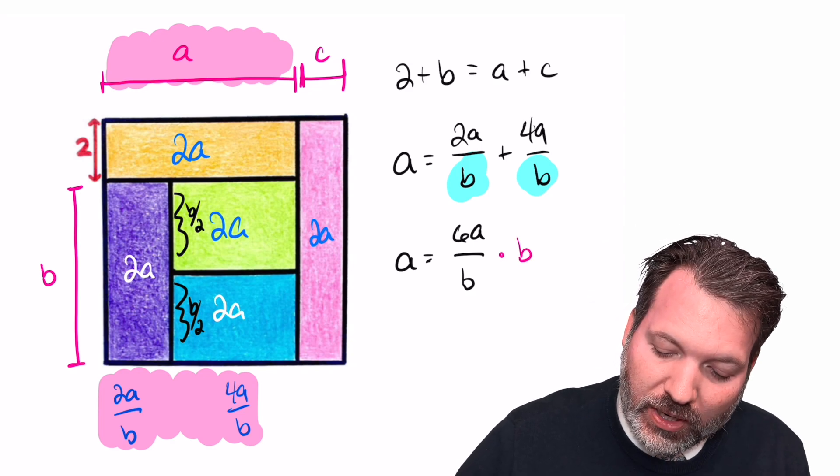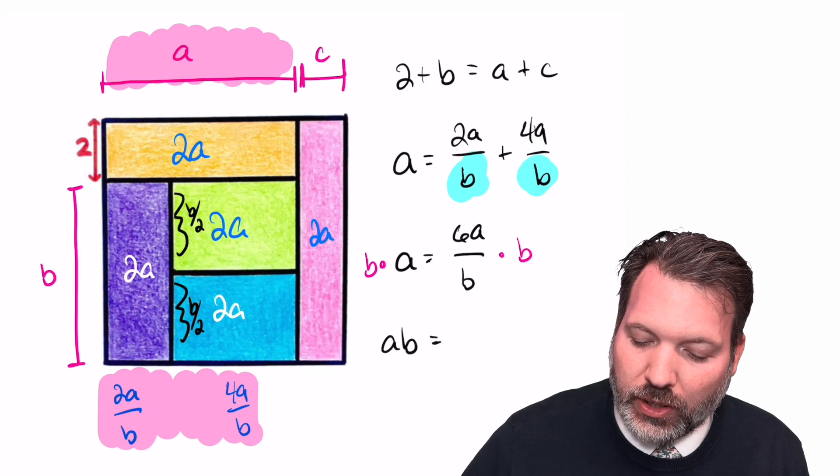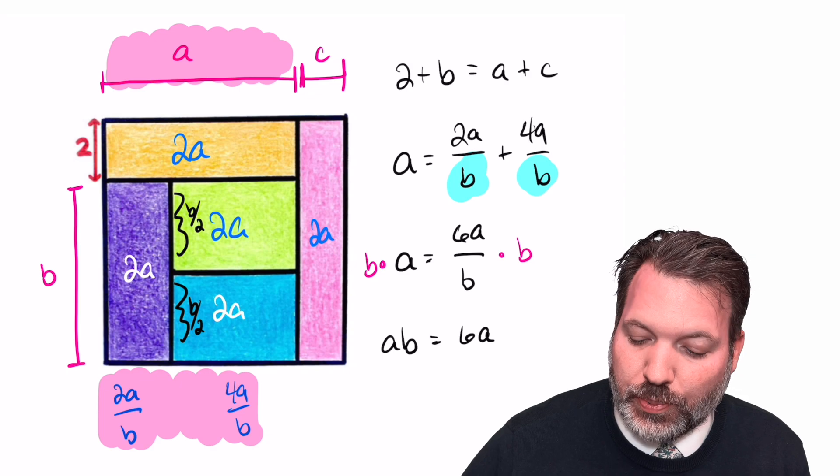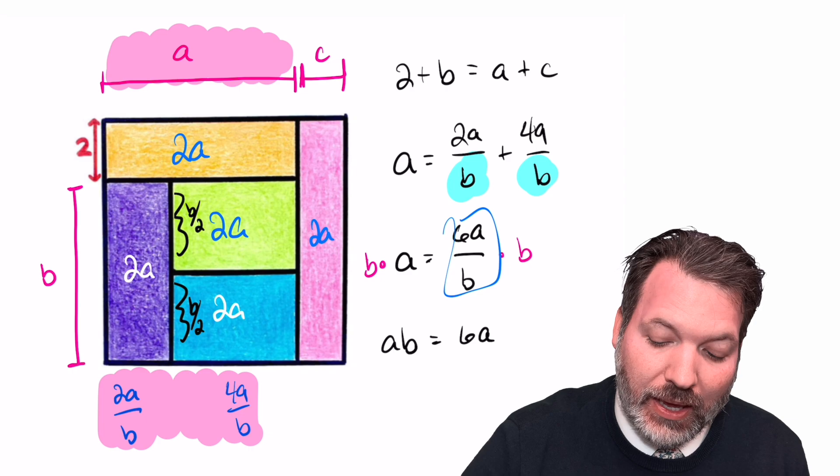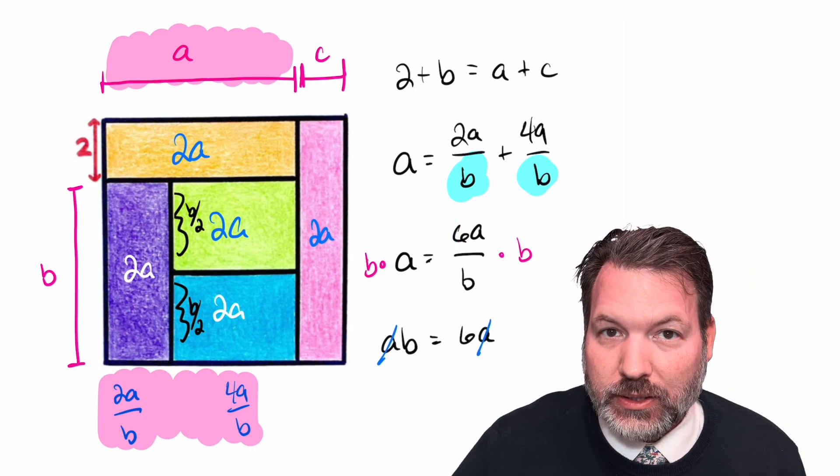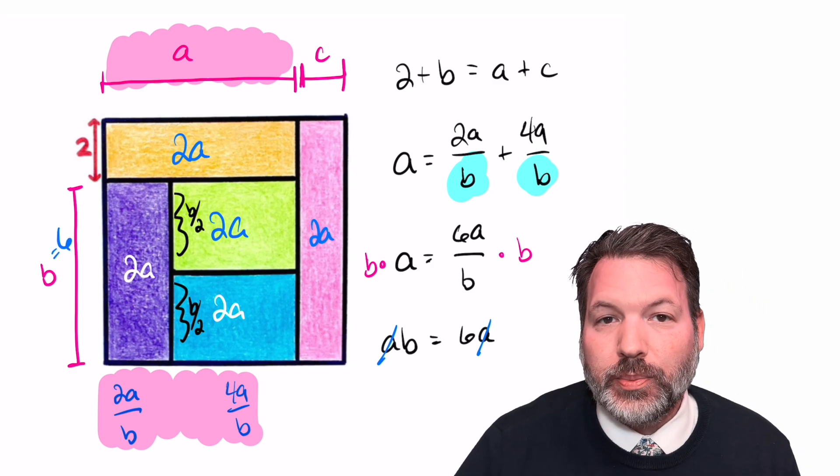There are a couple different manipulations we could use now, but the basic idea is we're going to realize the only way for this to work, a times b equals 6a, or a equals 6a over b, is if b itself is equal to 6. And so there we go. We know that this length here must be 6.